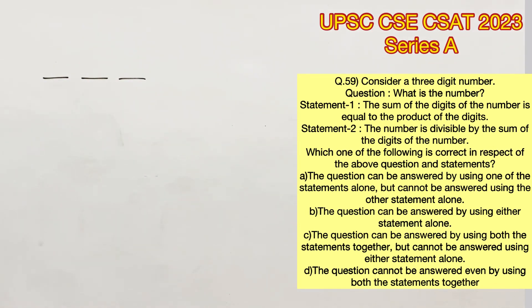Statement 1 says the sum of the digits of the number is equal to the product of the digits. Now this is a very commonly tested property in many competitive exams. The sum of the digits is equal to the product of the digits is always 1, 2 and 3. When you add 1, 2 and 3 you will get 6 and when you multiply 1, 2 and 3 you will also get 6.